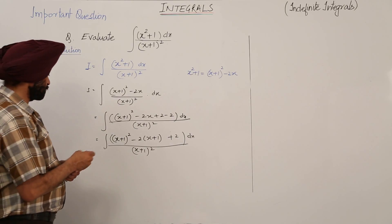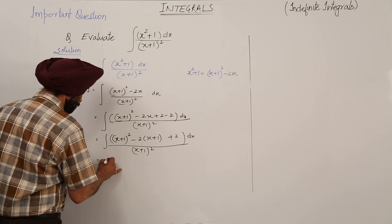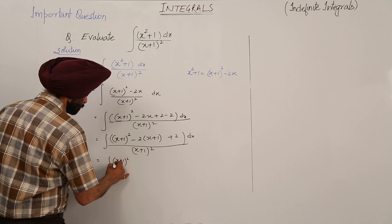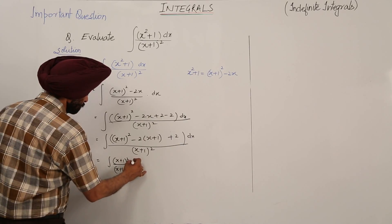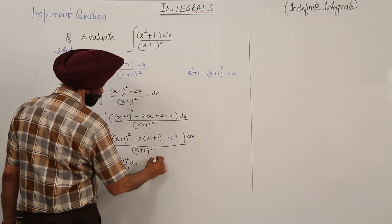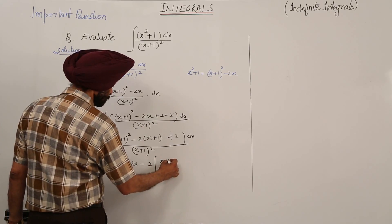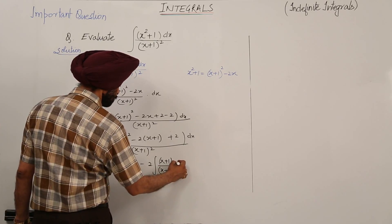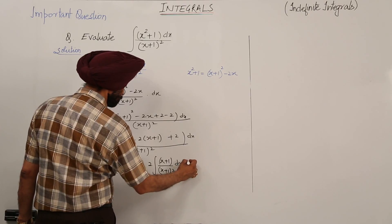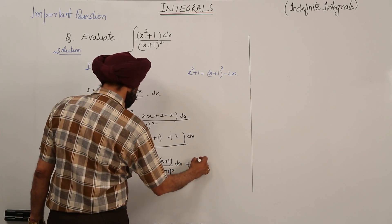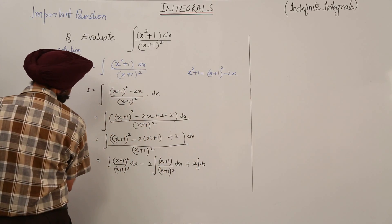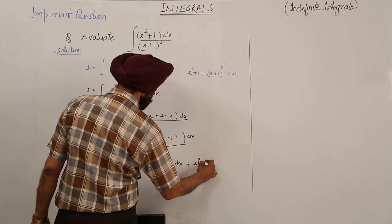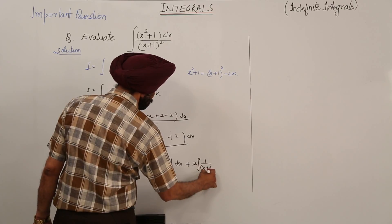Now, separating the independent terms: integration of (x + 1)²/(x + 1)² dx, minus 2 times integration of (x + 1)/(x + 1)² dx, plus 2 times integration of 1/(x + 1)² dx.